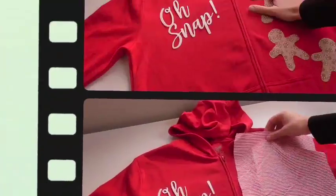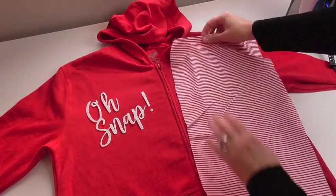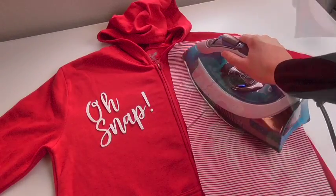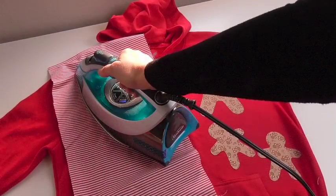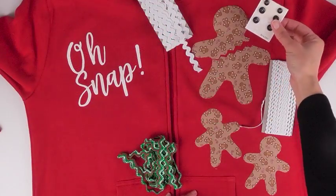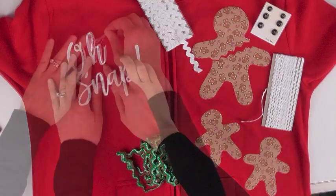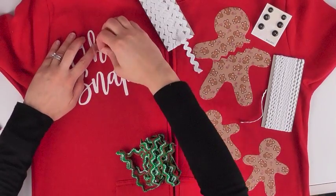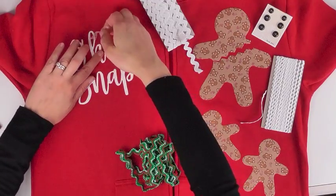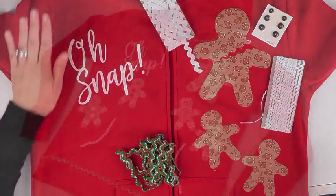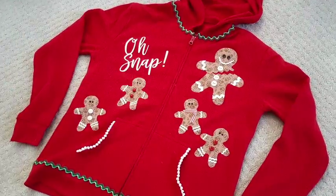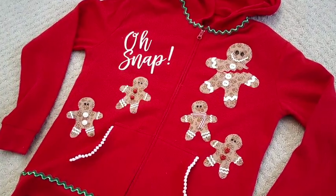So once all my pieces are cut out I can put them onto my sweatshirt and then cover them with a pressing cloth and iron them. And then I got some trim and buttons out to embellish. But first I want to make sure I peel off that protective cover that I cut through and I'm just going to gently pull it right off. And then when I embellish I just use fabric glue to adhere everything together.